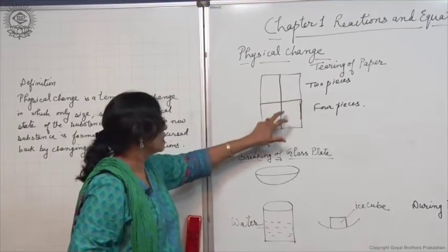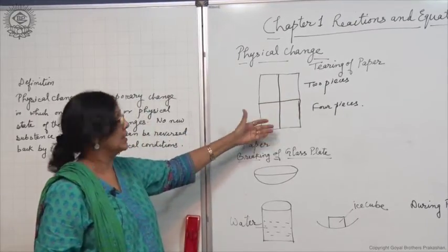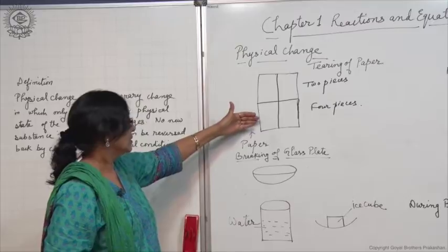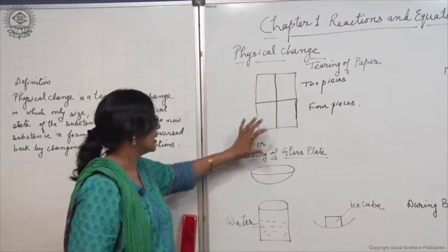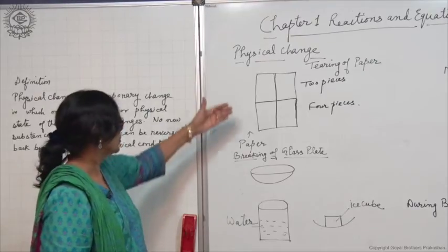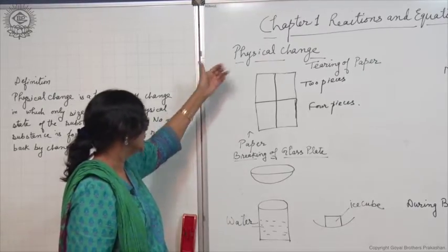All the four pieces of paper are the paper itself. There is no change. If we use glue, we can get back the paper again. So, this is a physical change.